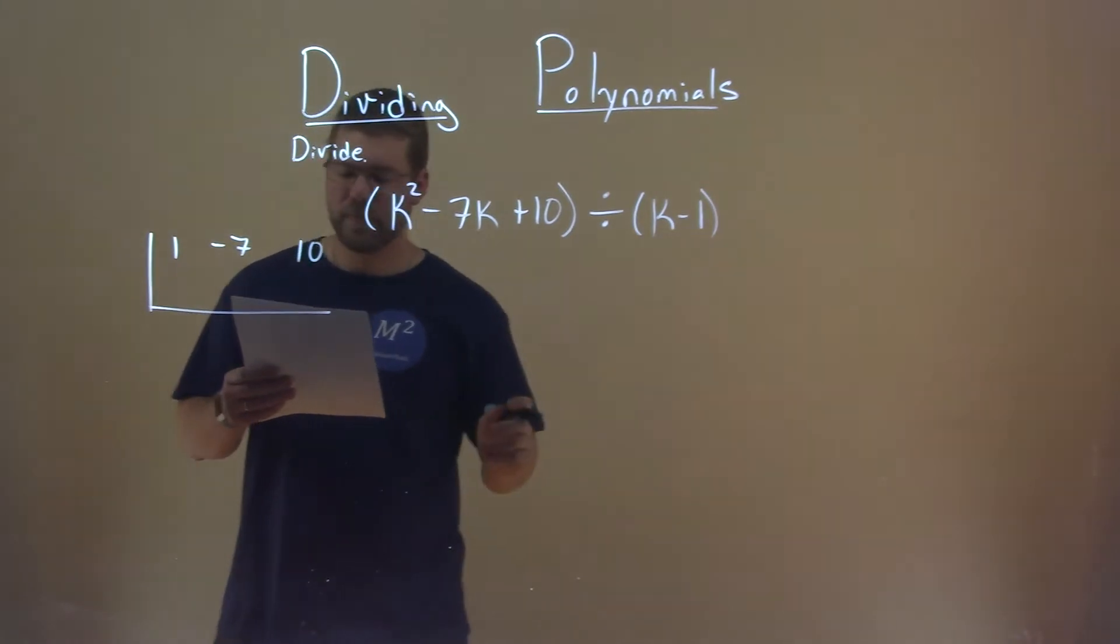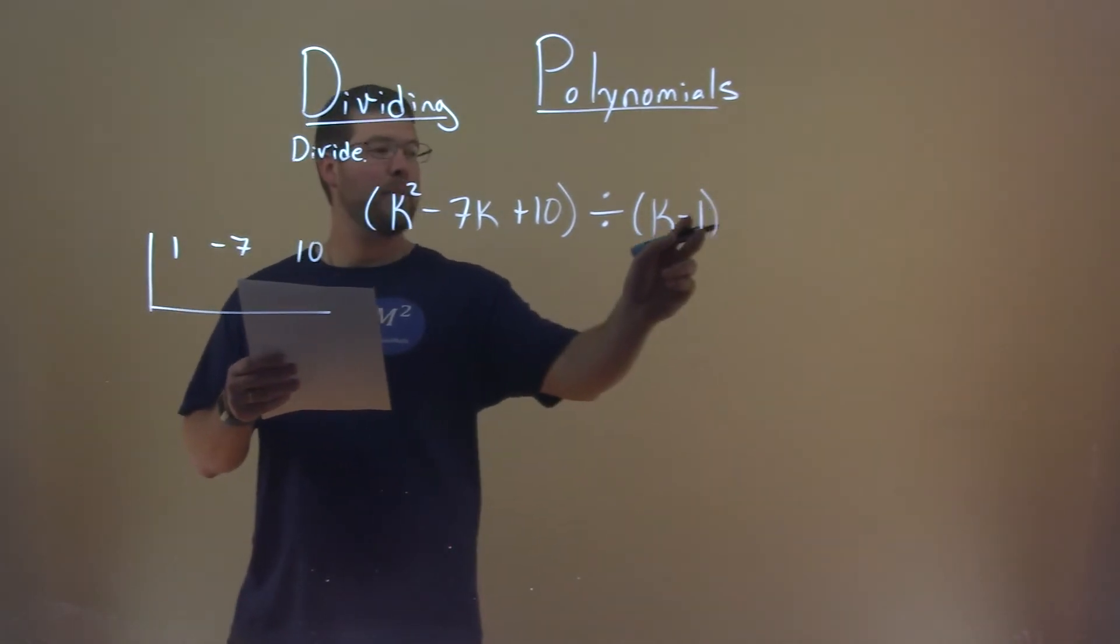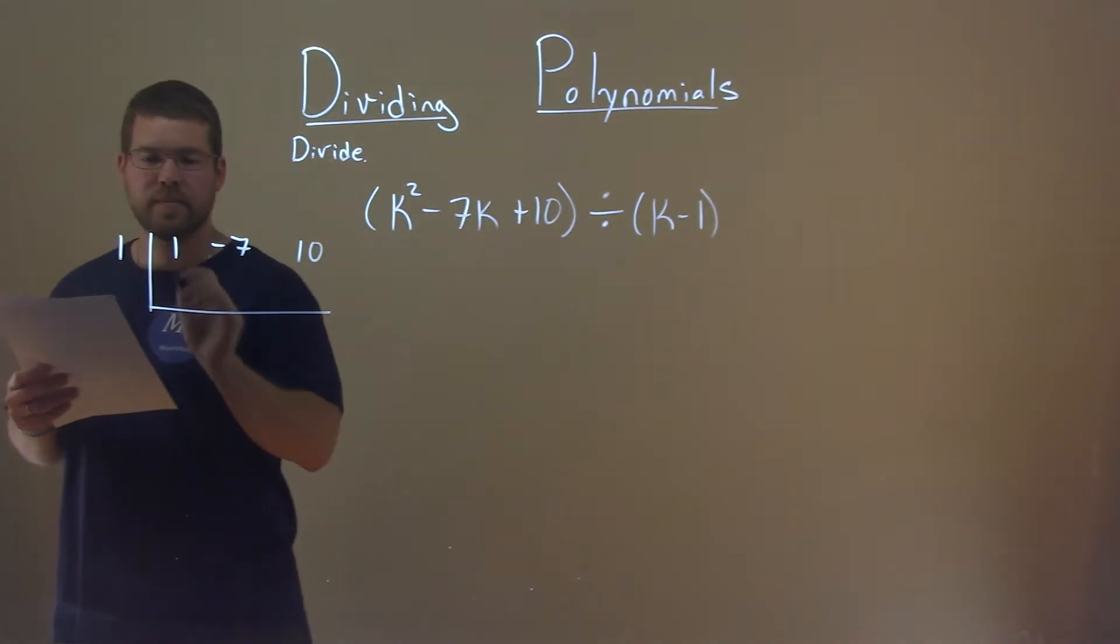Now, I have my k minus 1, so it's a minus 1. I'm going to put a positive 1 out here, make it opposite.